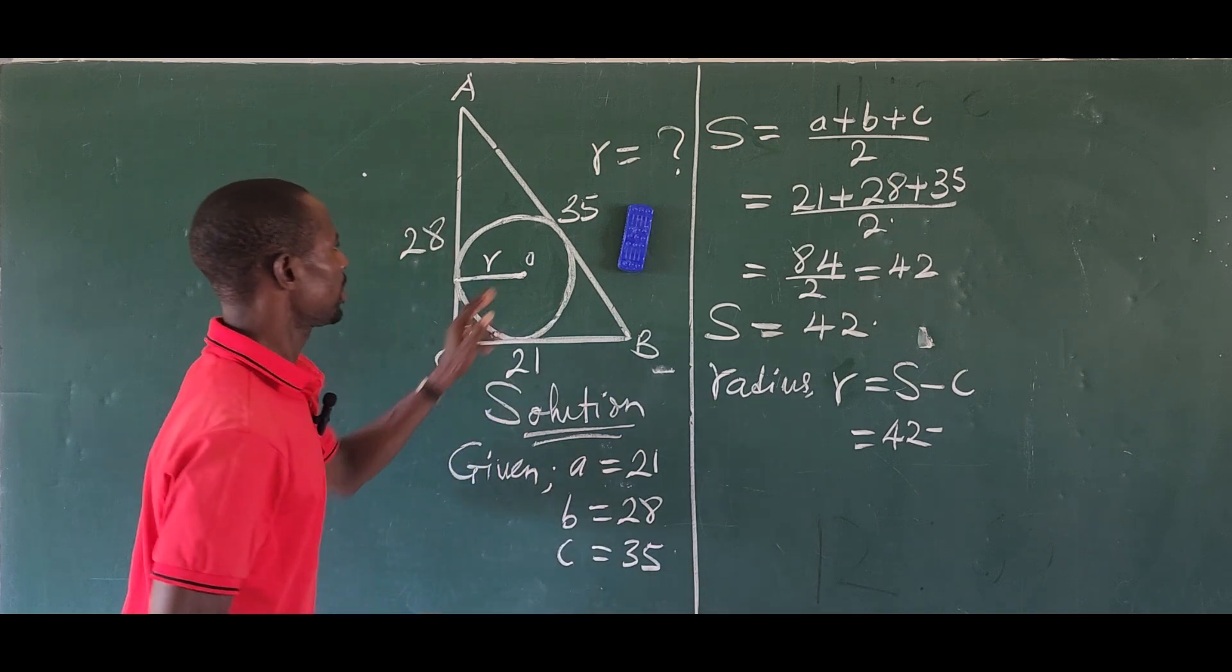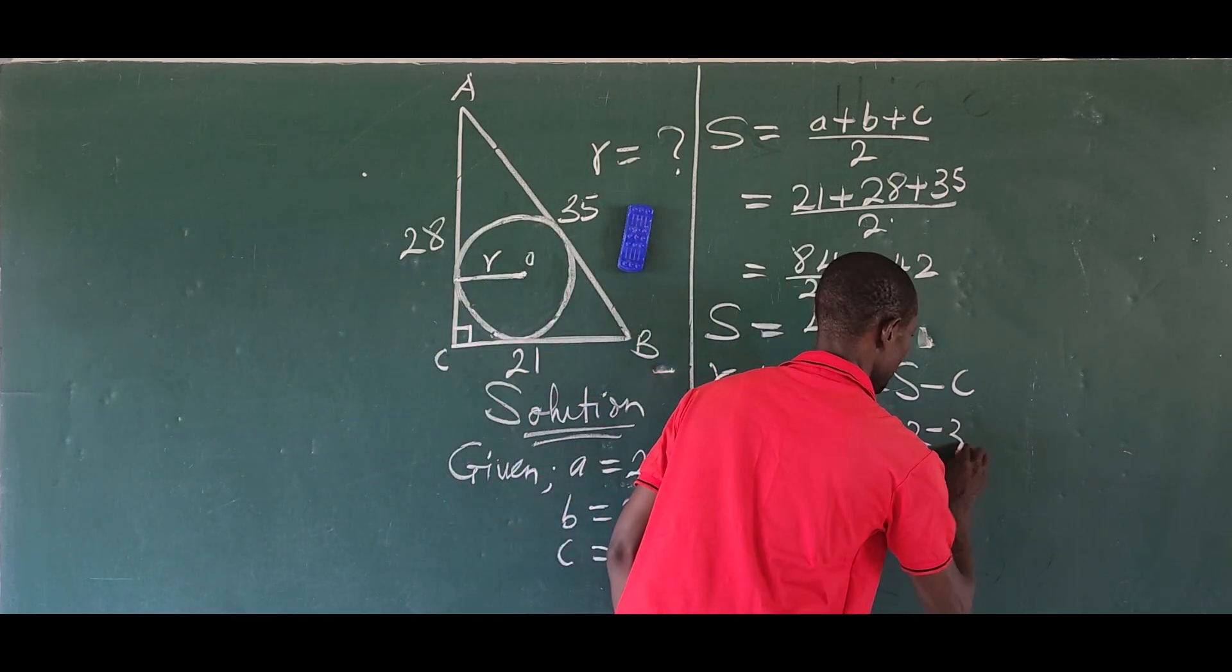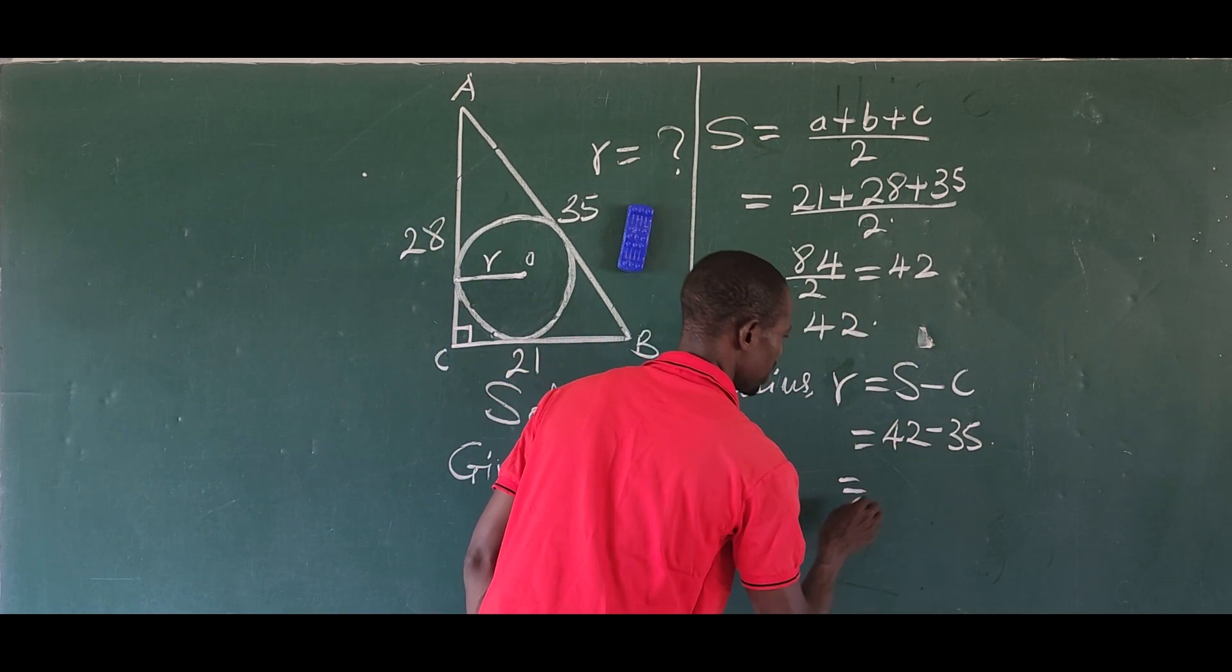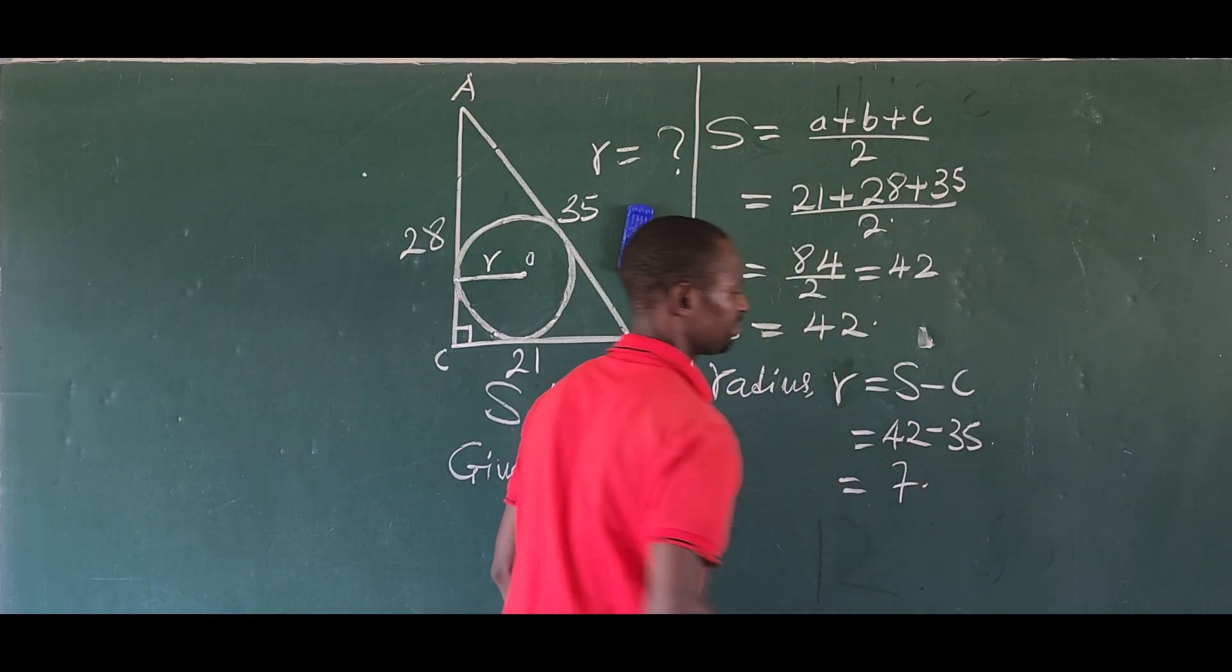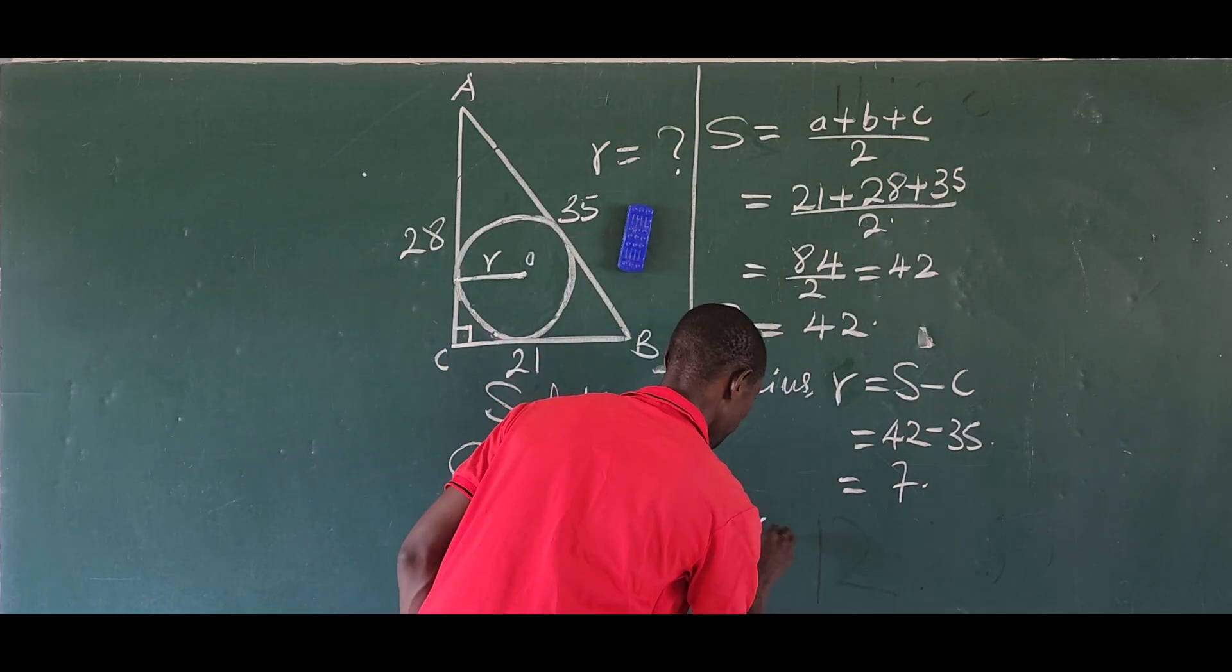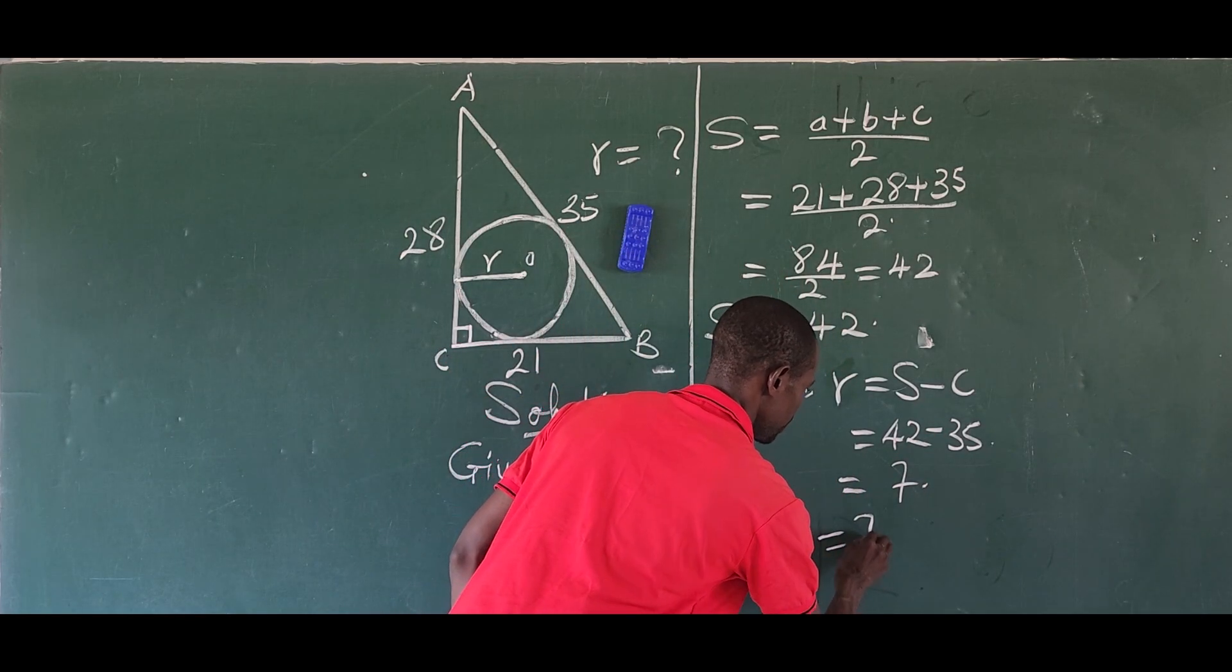We have 42 minus 35. If you subtract this, it will give us 7. Therefore, our radius equals 7. This is the first method, very straightforward.